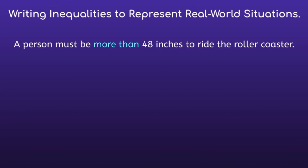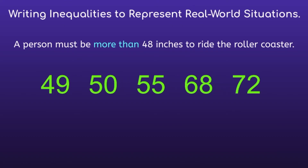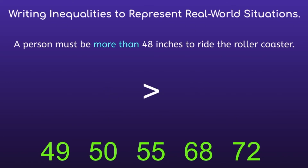So if a person must be more than 48 inches to ride a roller coaster, how tall could they be? They could be 49 inches, 50 inches, 55 inches, 68 inches, or 72 inches — any height as long as it's greater than 48 inches. So we want to determine which inequality symbol to use. Since it's 'more than 48 inches,' I know I can get rid of the less than symbol and the less than or equal to symbol. Now I only have two symbols left: greater than, or greater than or equal to. In this situation, it clearly states that it needs to be more than 48 inches, so we know that it cannot be equal. So our final inequality symbol will be the greater than symbol.